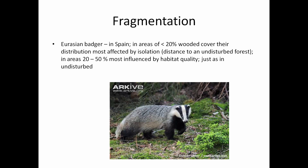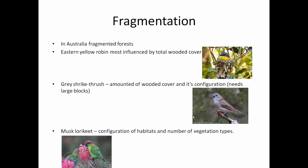The natural history of the Eurasian badger in Spain shows that in areas with less than 20% wooded cover, distribution was most affected by isolation — isolated areas had no badgers. In areas with 20 to 50% wooded cover, they were most influenced by habitat quality. Many species have a threshold value: if they've got 20 to 40% of suitable habitat and the matrix isn't too hostile, they can be just as dense as in undisturbed habitat.